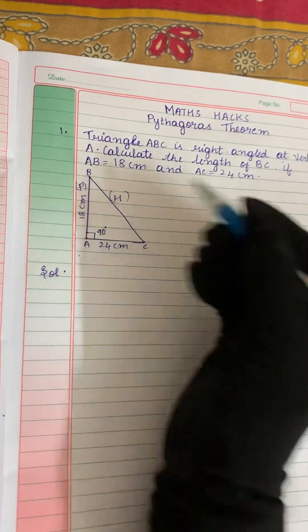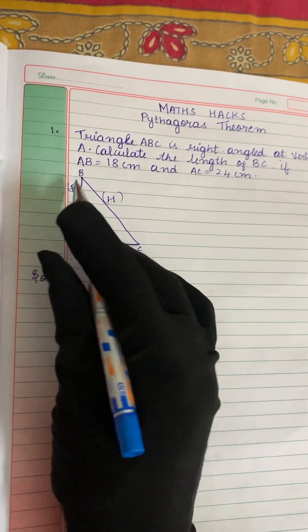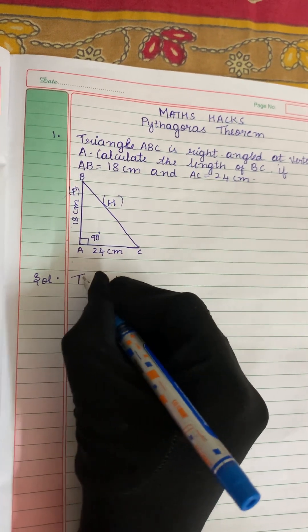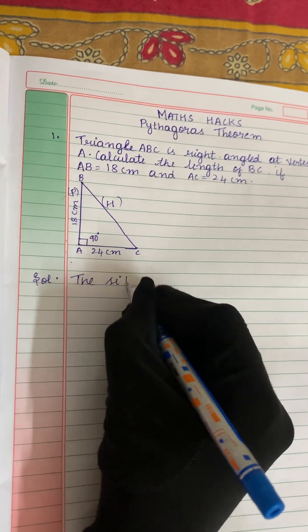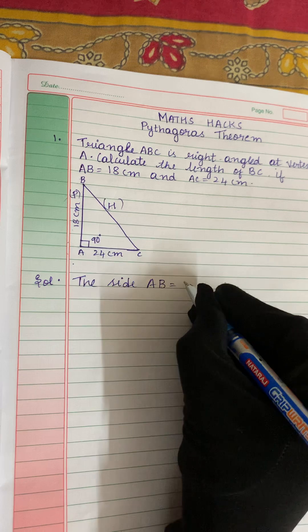So let us solve this question. They have given us the value of AB. So the side AB is equal to 18 cm.